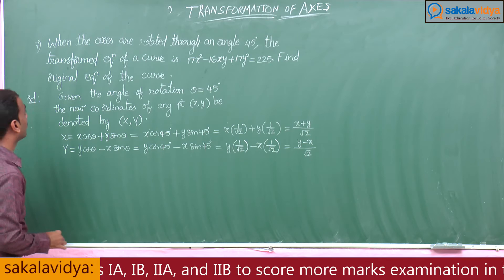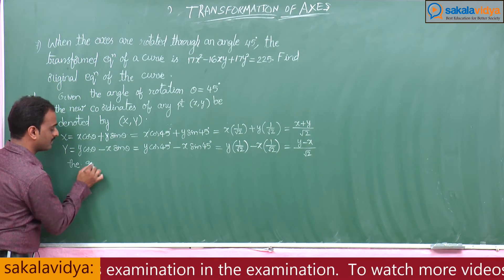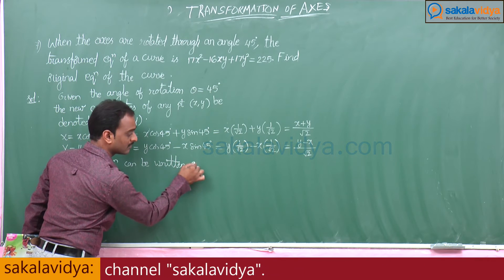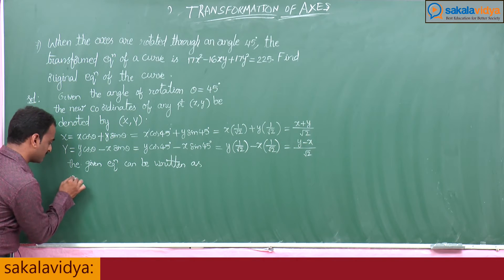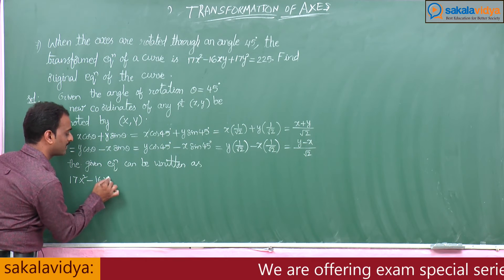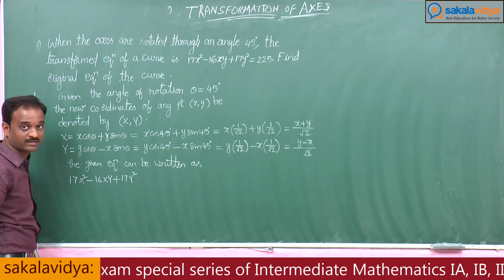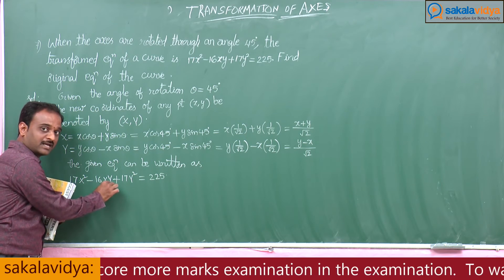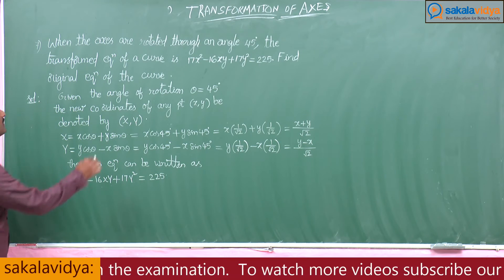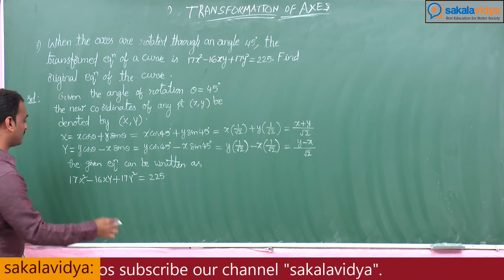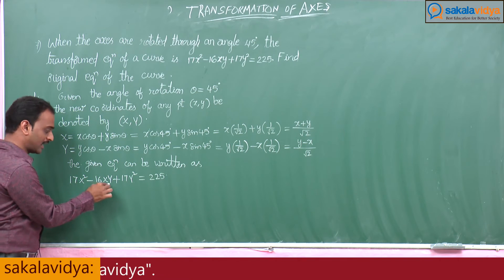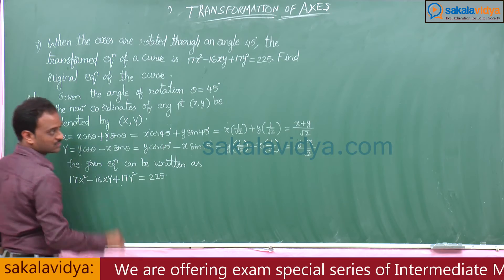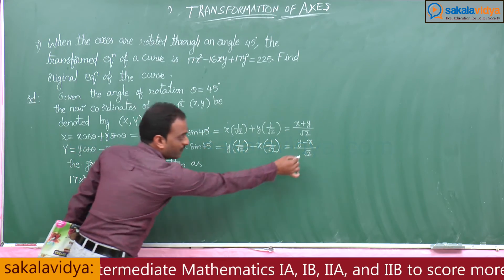Since the given equation is the transformed equation, we write it as 17X² minus 16XY plus 17Y² equals 225. Now we substitute: capital X equals (x + y)/√2 and capital Y equals (y minus x)/√2.